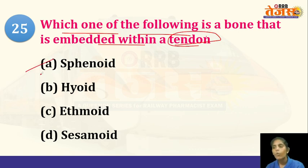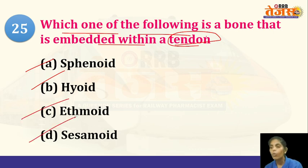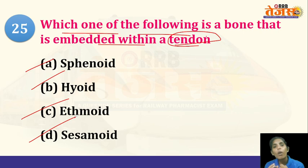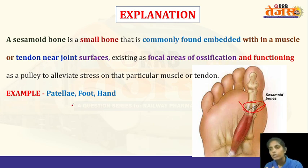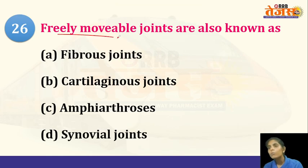Next: which of the following is a bone embedded within a tendon — sphenoid bone, hyoid bone, ethmoid bone, or sesamoid bone? The answer is the sesamoid bone. A tendon attaches muscle to bone, and sesamoid bones are sesame-like bones present within tendons. They are found in the foot, the hand, and also in the patella (the knee bone).